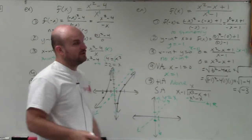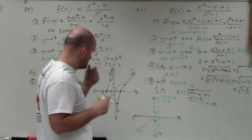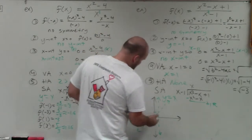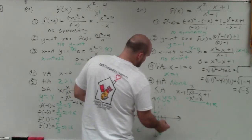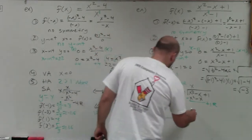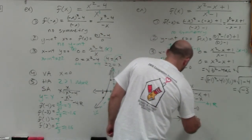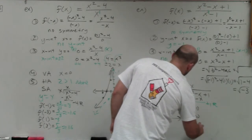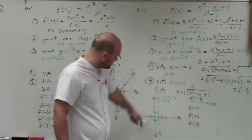Now let's graph this equation. We don't have any symmetry. We have a y-intercept at negative 1, no x-intercepts, a vertical asymptote at x equals 1, and a slant asymptote at y equals x. We're going to choose two points to the left and to the right of our asymptote. I'll choose negative 1, and to the right: positive 2 and positive 3.